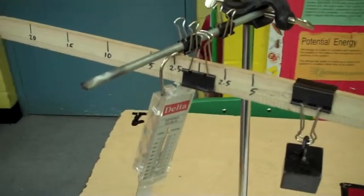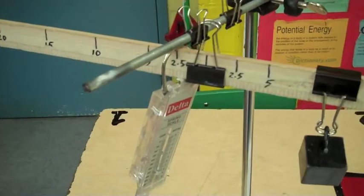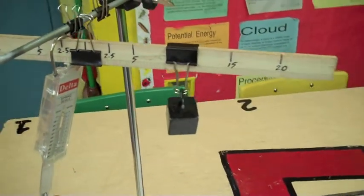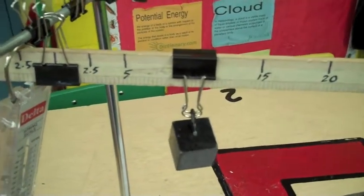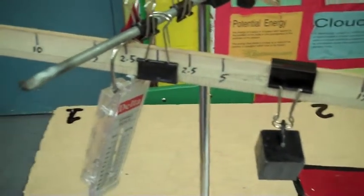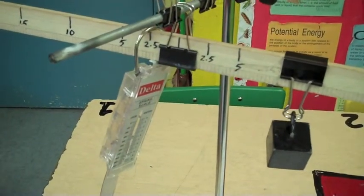In this experiment, we want to see what happens when we move the effort along the effort arm. Here, the load, which is 240 grams, is placed 10 centimeters away from the fulcrum, and we're starting with the effort at 2.5 centimeters away from the fulcrum.